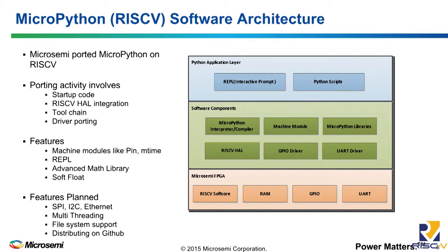The software MicroPython, a macro keyboard and macro Python, is available for ARM architecture, and we ported it to RISC-V. The porting involved architecture porting and board porting. It has three features: a machine module to communicate with the hardware,